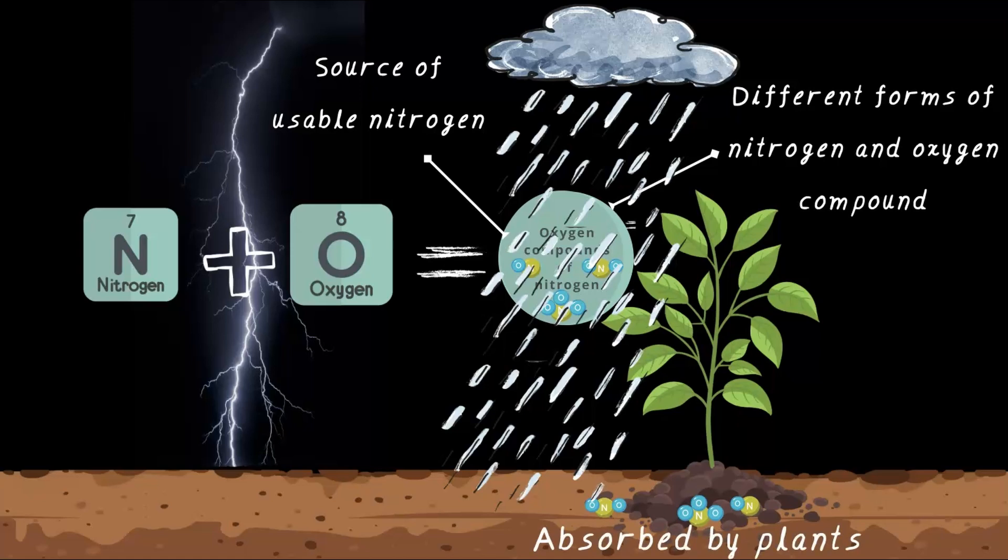And just like that, thanks to lightning and rain, plants get the nitrogen they need. I find this really fascinating, the whole process of how lightning is fixing nitrogen for the plants. What do you think?